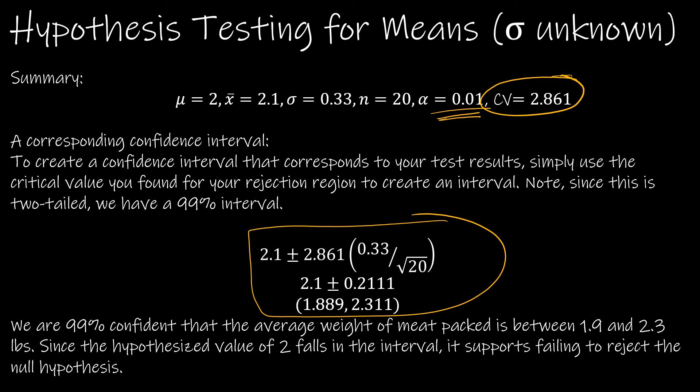So I'm 99% confident the average weight of meat packed is between 1.9 and 2.3 pounds. And since 2 is in there, 2 is an acceptable measure. It supports failing to reject the null hypothesis.